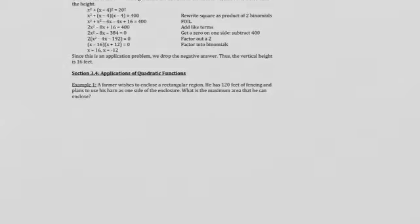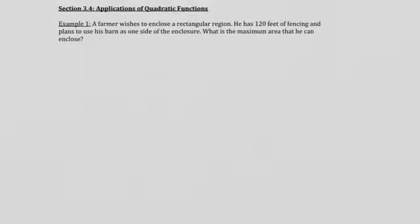Okay, so now let's jump on the next problem. In the next problem, we have in section 3.4, a farmer wishes to enclose a rectangular region. So first of all, let's try to represent this rectangular region. So, we have a rectangular region, and it has 120 feet of fencing.